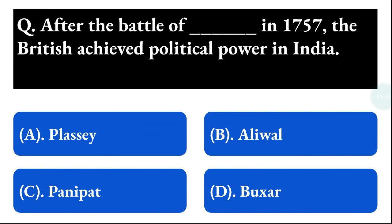Next question: after the Battle of Plassey in 1757, the British achieved political power in India. The battle was fought at — option A: Plassey, option B: Aliwala, option C: Panipat, option D: Boxer. The correct answer is option A, that is Plassey.